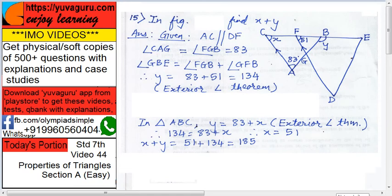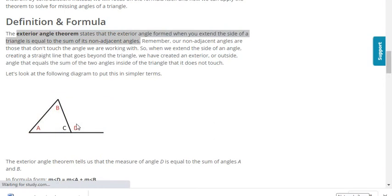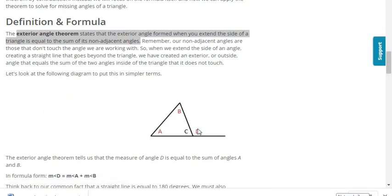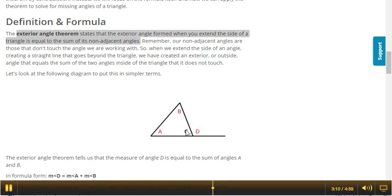It says the measure of the external angle is equal to the sum of the remote interior angles A and B. Remote means which is not adjacent - remote interior angles in a triangle. So the exterior angle equals A plus B.